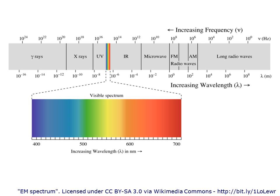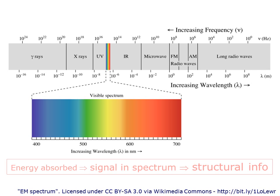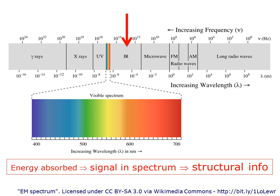Spectroscopy is all about light — indeed the whole of the electromagnetic spectrum — and the interaction of that light with matter, i.e., molecules. In the simplest sense, light or radiation interacts with a sample. Energy is absorbed, giving rise to a signal in the spectrum, and from that signal we work backwards to deduce structural information about the molecular structure. The spectroscopic techniques we're going to talk about use infrared and UV-vis radiation, as per the names of those techniques, and also long wavelength radio waves in NMR.